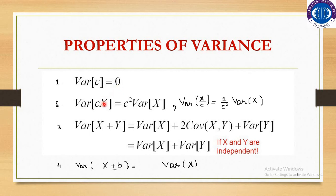Similarly, if x is some variable and you multiply some constant c with it, then the variance of c times x will be c squared times the variance of x. Or if you divide the variable by some constant, giving x over c, it would be 1 over c squared times the variance of x.